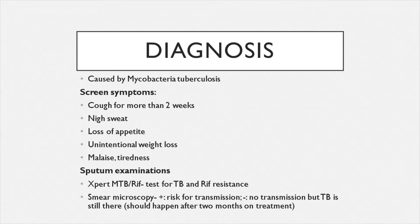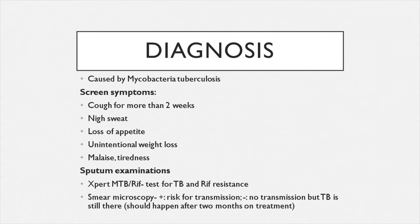Next is sputum examination. If you have a cough and night sweats, they will expect you to have a GeneXpert — this is when you cough up mucus and spit into a small specimen jar sent to the lab. They check for the presence of Mycobacterium tuberculosis and also check its sensitivity to rifampicin. If it's not sensitive to rifampicin and can overcome it, that means you have drug-resistant TB, requiring a different treatment regimen. If sensitive, you are put on the normal first-line TB treatment.